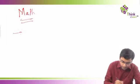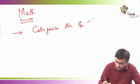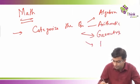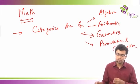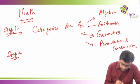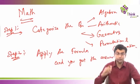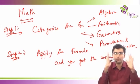The way I have modeled this entire session is very similar to the way you solve mathematics questions. In a math question, you first categorize the question — you identify whether it is an algebra, arithmetic, geometry, or permutation and combination question. Before you apply the formula, you need to know what formula to apply, and for that you need to categorize. So step one: categorize the question. Step two: apply the formula and get the answer. These are the two steps you follow in any mathematics question.